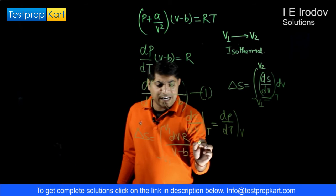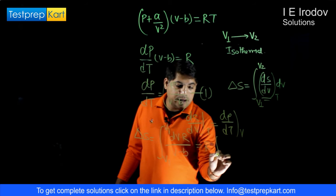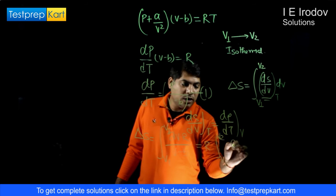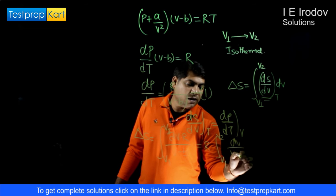So we can take this R out. Integration from V1 to V2, dV/(V - b).